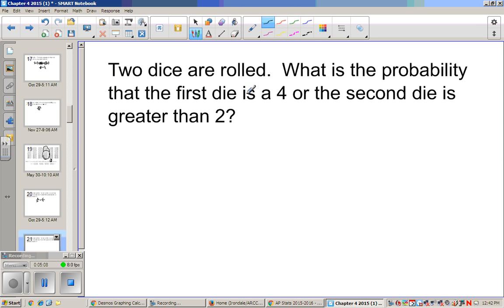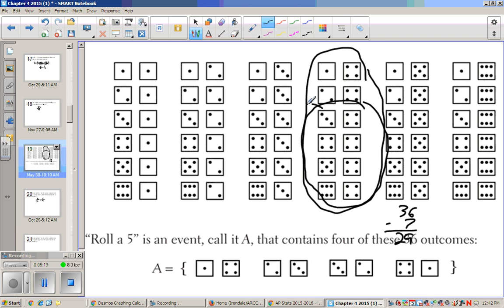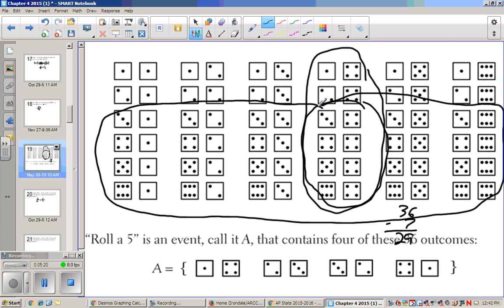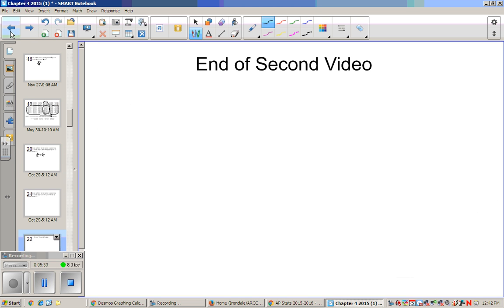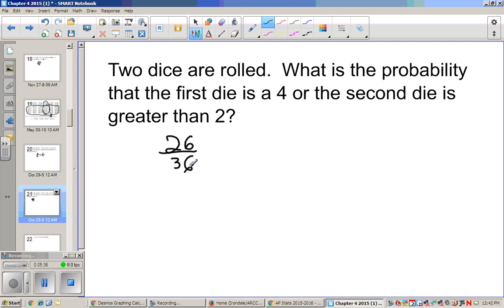Now, if I said, what's the probability that the first die is 4, or the second one is greater than 2? We can go back. And if the second die is greater than 2, that covers all of these. So that is 4, 8, 12, 16, 20, 24, 25, 26. So now that one is going to be 26 out of 36. Alright, hopefully you can do the homework on your own.